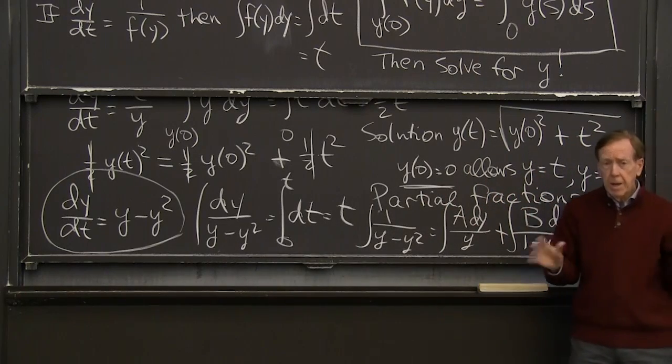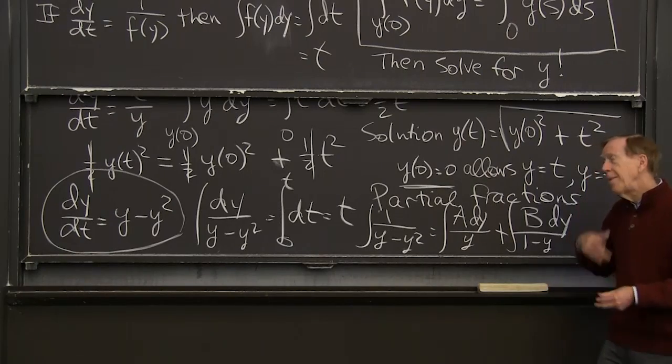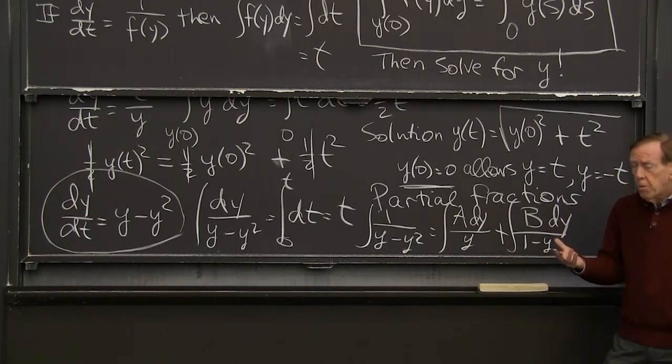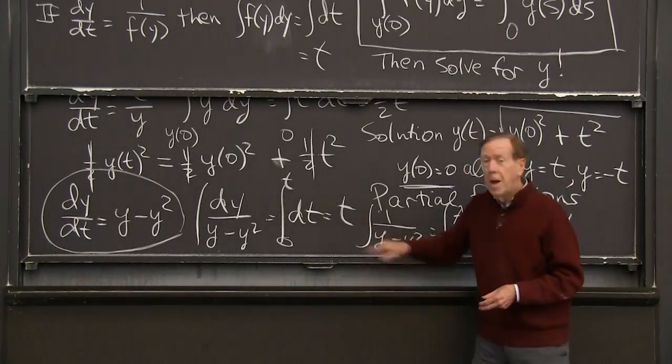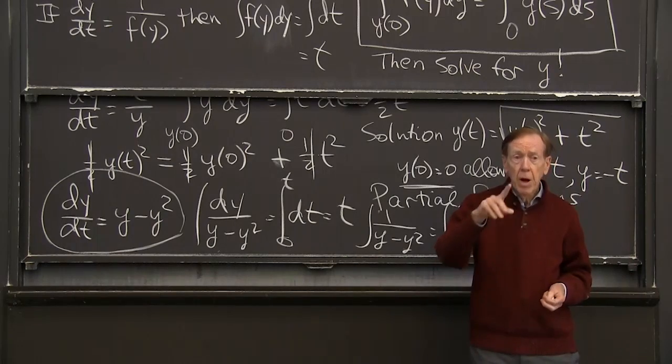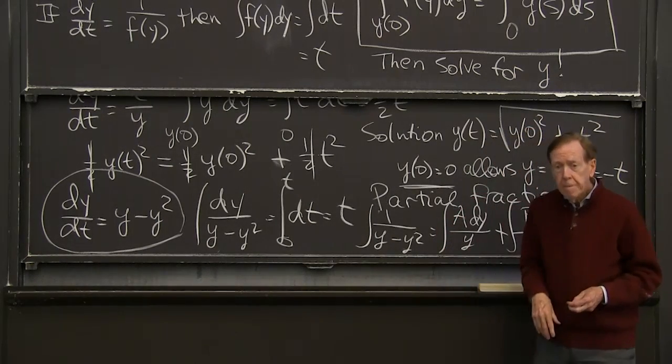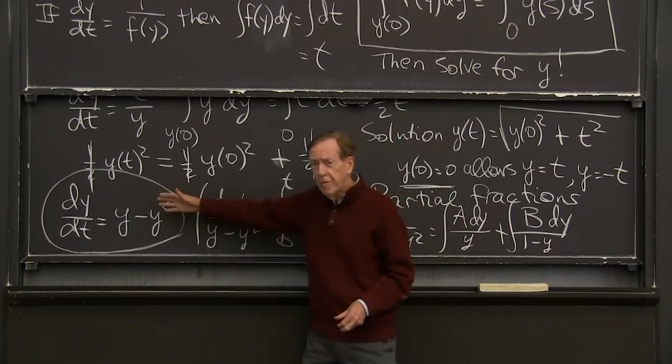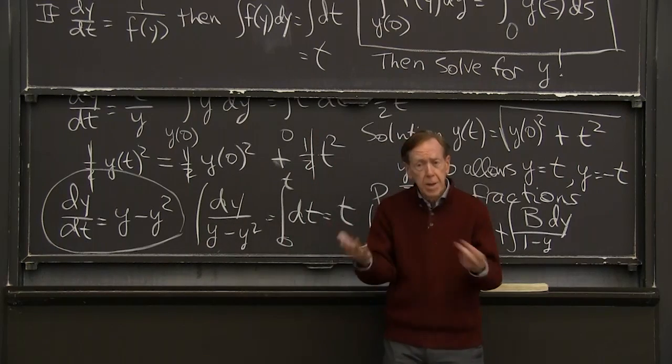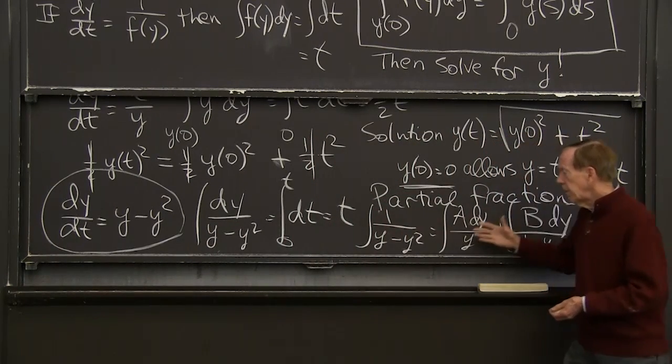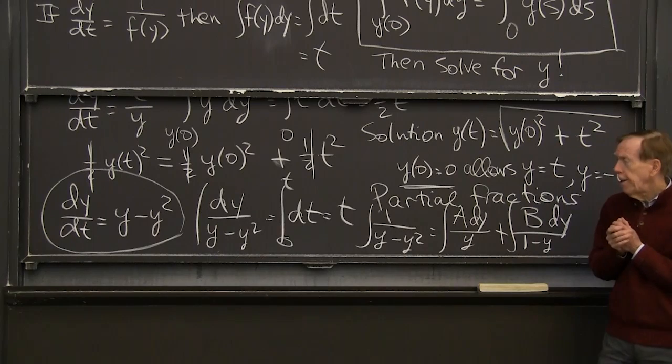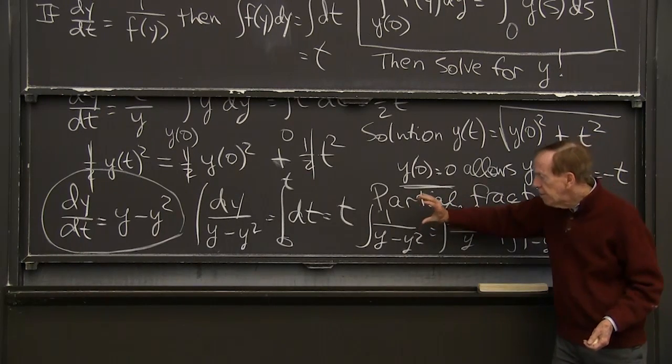But if we don't see how to do that, partial fractions is the systematic way. One fraction, another fraction, integrate those fractions, put the answer together. And then, at the end, this is the sum integral, depending on y, equal to t. And to finish the problem perfectly, I would have to solve for y as a function of t. And that was what came out so beautifully by letting 1 over y be z. We got an easy formula for z, and then we had the formula for y. This, we would integrate easily enough. But then, we have to solve to find that formula for y.